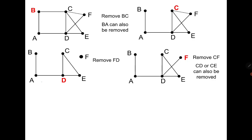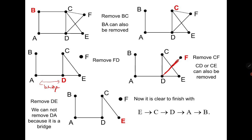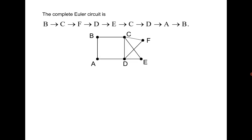This means that if there is a bridge I should try to avoid it. A bridge means a cut edge. FD was also a bridge but there was no option, so I had to go through it. Here there is an option, so I should not go to DA. Instead I go to DE, moving to E, then from E: C, then D, then A, then B — giving the required Euler circuit.